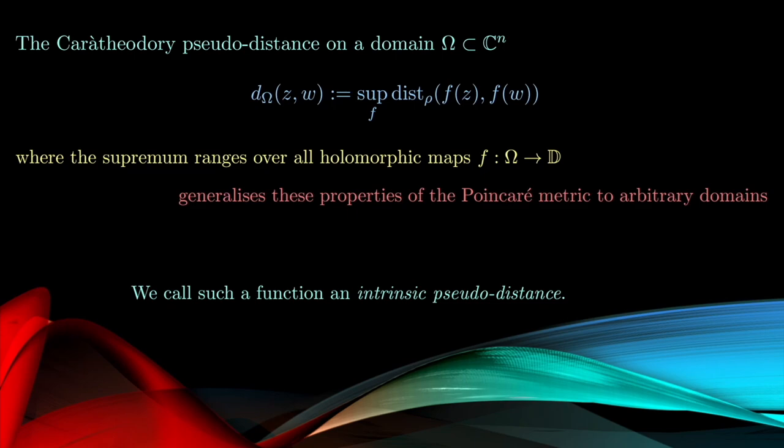It's a pseudo-distance function instead of an honest distance function, because it can be degenerate. If Omega was allowed to be compact, for instance, then all holomorphic functions would be constant, and therefore it would just annihilate everything. The distance between any two points would be zero. This is an instance of what's referred to as an intrinsic pseudo-distance.